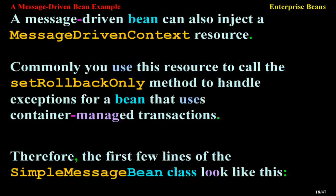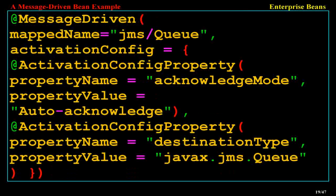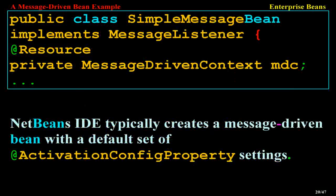A message-driven bean can also inject a MessageDrivenContext resource, commonly used to call the setRollbackOnly method to handle exceptions for a bean that uses container-managed transactions. The first few lines of the simple message bean class look like this: @MessageDriven(mappedName="jms/Queue", activationConfig = { @ActivationConfigProperty(propertyName="acknowledgeMode", propertyValue="Auto-acknowledge"), @ActivationConfigProperty(propertyName="destinationType", propertyValue="javax.jms.Queue") }) public class SimpleMessageBean implements MessageListener { @Resource private MessageDrivenContext mdc; }